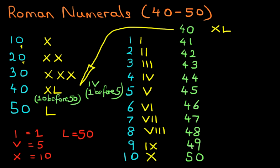Now how do we do 41? Well, firstly, we do the 40, which is XL. And then we do the 1, which is simply an I. So this number is 41. XLI is 41.